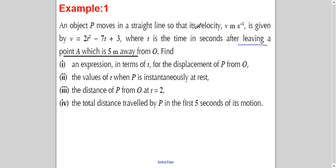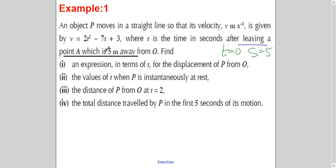An object P moves in a straight line so that its velocity is given by this equation, where T is the time in seconds after leaving a point A which is 5 meters away from O. This means when T equals 0, S equals 5, and when T equals 0, V equals 3 as given in the equation. These initial conditions are given because when you integrate you get an arbitrary constant, and to find its value you need to substitute known values.